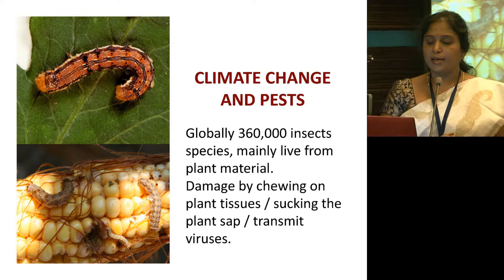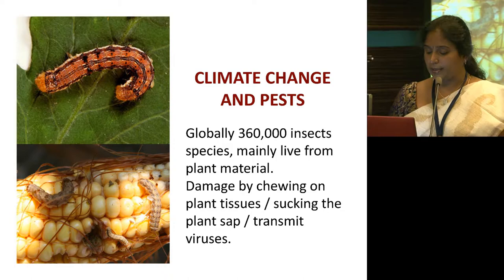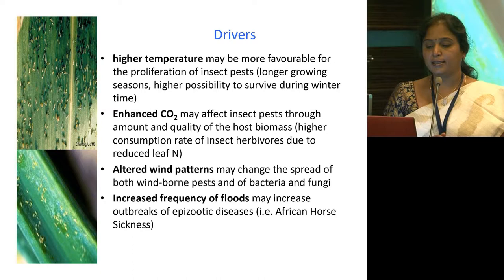Coming to the pest side: globally there are 360,000 insect species that mainly live from plant material. Damage is caused by chewing on plant tissues, sucking on plant sap, and transmitting viruses. The major drivers of pest spread are higher temperatures, enhanced CO2, altered wind patterns and increased frequency of floods.